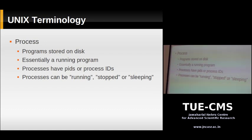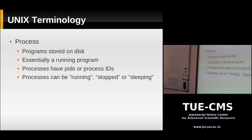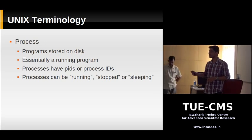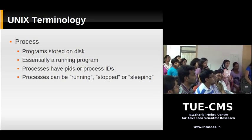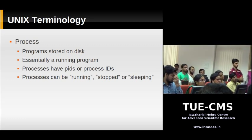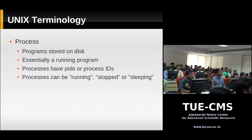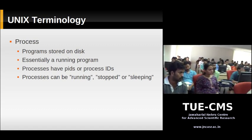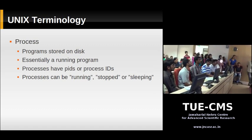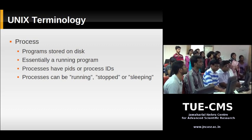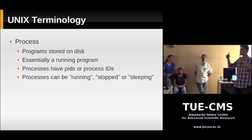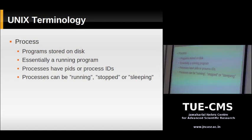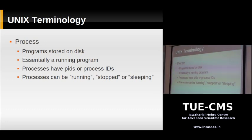Now for some Unix terminology. What's a process? You write programs in a language like C or Fortran, compile it, and get an executable file. Once you run a program, the operating system reads that file, copies it into main memory (RAM), and tells the CPU to execute that code. Once the program is loaded into memory and the CPU starts executing it, that program becomes a process. In Unix it's called a process — a program which has been loaded into memory and is ready to run or is running. Every process has a process ID so you can keep track of running programs.